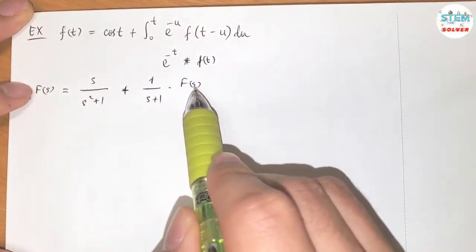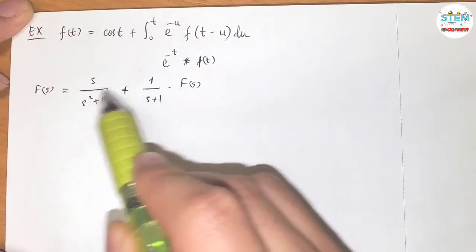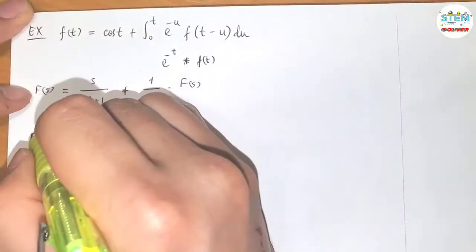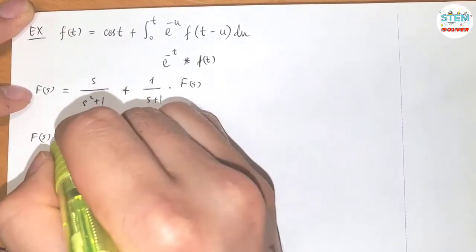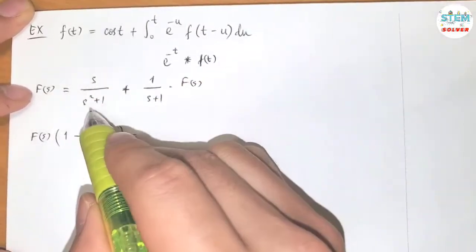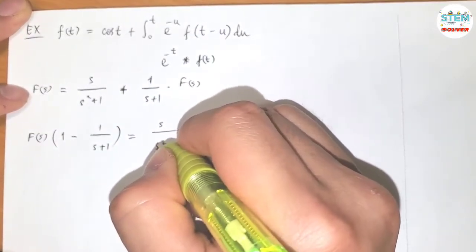For this one, you see, we have capital F of s on both sides. So I'm going to move it to one side and factor it out. I'm going to move this to the left side and factor it out at the same time. So left with 1 minus 1 over s plus 1, and that is equal to s over s squared plus 1.